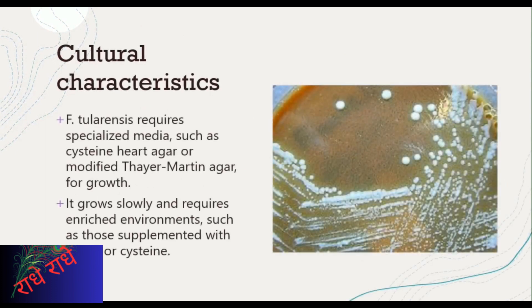F. tularensis is an organism that requires an enriched environment to grow and thrive. It has specialized growth media, such as cysteine heart agar or modified Thayer-Martin agar. This is important for developing effective treatments and preventative measures for this infection.